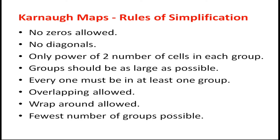Some of the rules we need to remember and apply during K-map simplification: first, no zeros are allowed to be grouped in the K-map. Second, no diagonals — diagonal cells cannot be grouped. Third, only a power of 2 number of cells in each group — whenever we are grouping cells it should always be a power of 2, that is 2, 4, 8 and so on.